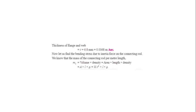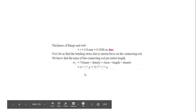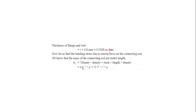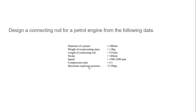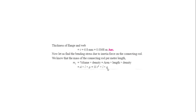Finally, we calculate the mass of the connecting rod per meter length. Using m_l = volume × density, and volume = area × length, we get m_l = A × l × ρ. Here A = 11t² (in meters), l is the length per meter basis, and ρ is the density in kg/m³. Substituting all known values gives the mass of the connecting rod per unit length.